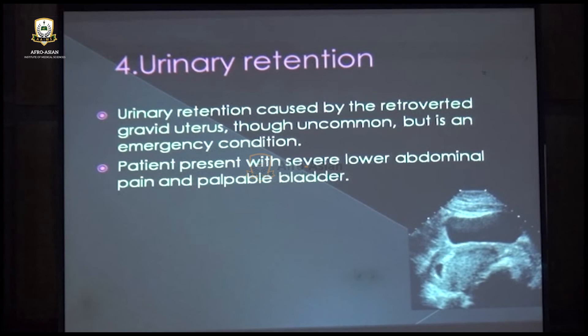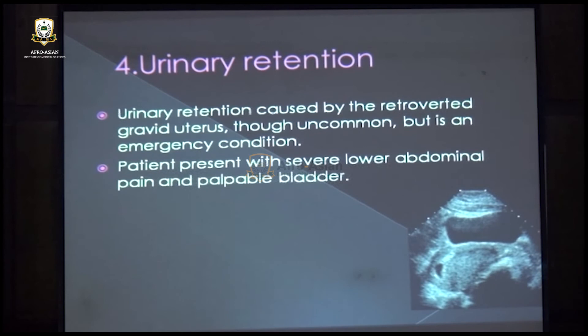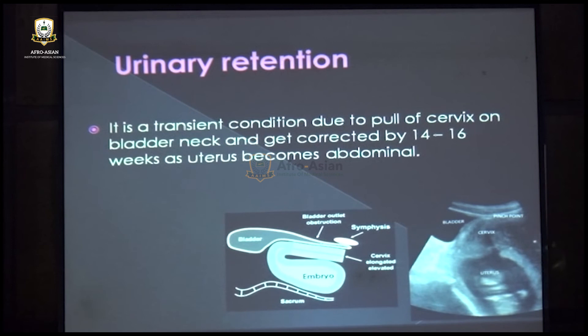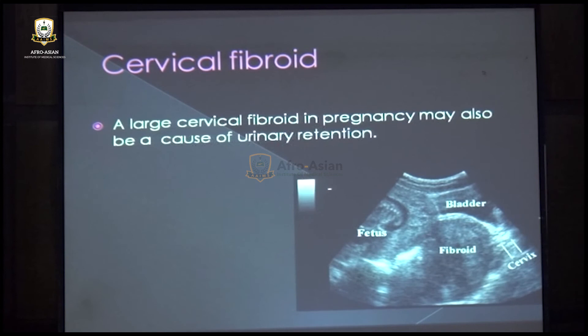The fourth presenting feature is urinary retention, most often associated with a retroverted uterus. The pull of the cervix on the bladder neck causes bladder outlet obstruction — a transient finding that resolves by 14 to 16 weeks of pregnancy. A large fibroid within the cervix may also pull on the bladder neck and produce urinary retention. Whenever urinary retention is present, we must assess the position of the uterus and look for a mass or growth in the cervix.